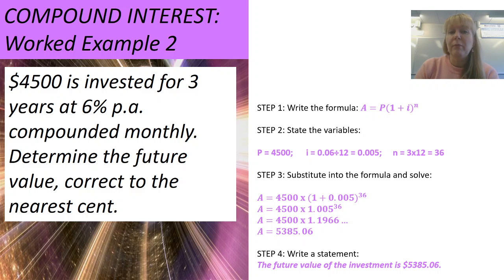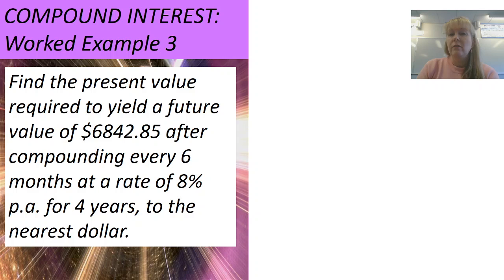Let's look at worked example 3. Find the present value. We see a little bit of a difference here. We're not finding a future value anymore. So, present value, we're actually going to find P, the principal. We need to find the principal that is required to yield a future value of $6,842.85. After compounding it every six months at a rate of 8% per annum for four years to the nearest dollar. I've got a different kind of rounding in this question as well, and I know I'm going to have to be converting my interest rate and my period. So I've got a little bit of work to do in between when I'm stating my variables.